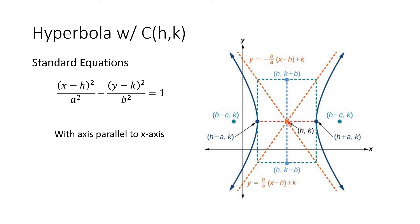From our center to our foci, we add and subtract a value of c to get the coordinates of our foci. So for our focus on the left, we have (h minus c, k), and the focus on the right is (h plus c, k).